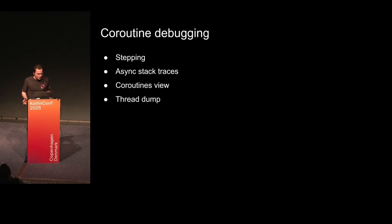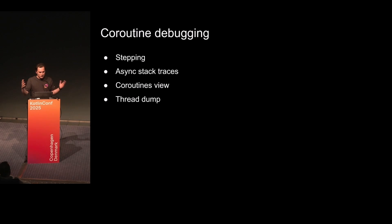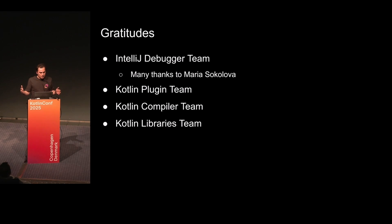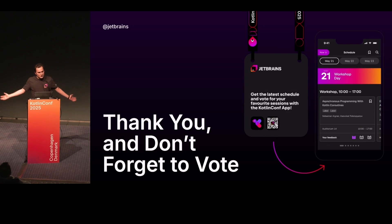So let's summarize what we have for coroutines debugging. We have nice stepping which preserves the current coroutine. We have async stack traces to investigate the state of parent coroutines when they were called. And we have coroutines view and thread dumps to investigate all coroutines in your program. In the end, I want to express gratitude to the many teams involved in creating this — we need input from the compiler, from the coroutine library to extract information, and so on. Thank you for your attention.